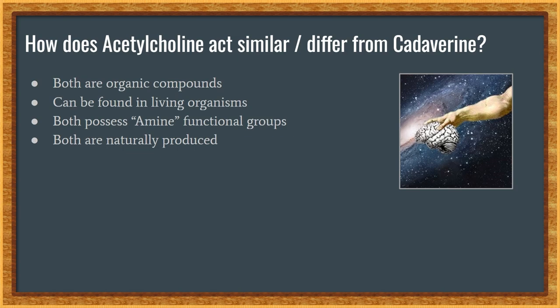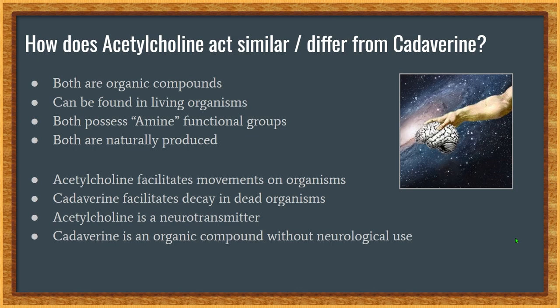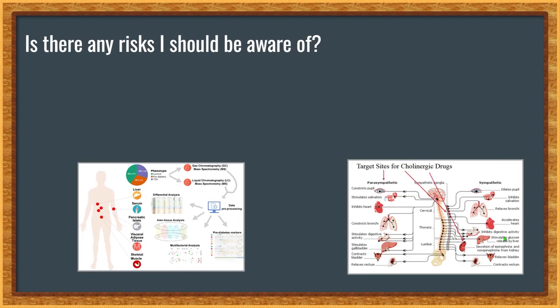How do they differ? That's a bit more straightforward. Acetylcholine helps facilitate movement and functions for a living organism, while cadaverine facilitates decay once the organism has died. And finally, most obviously, acetylcholine is a neurotransmitter while cadaverine is not.